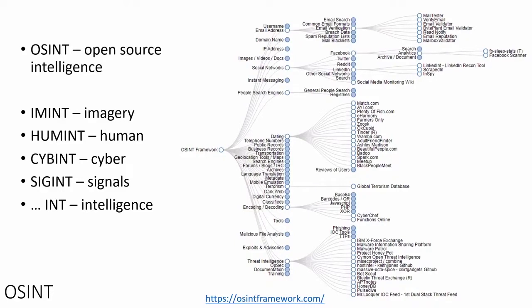Then of course you have human intelligence — that's basically the part where you have agents. I cannot really comment on how it works in reality, but usually it's not as interesting as in movies. It's just talking with people, maybe smoking cigarettes with them, getting to know some stuff, writing some reports. There's also cyber intelligence, where some part overlaps with open source intelligence tools.